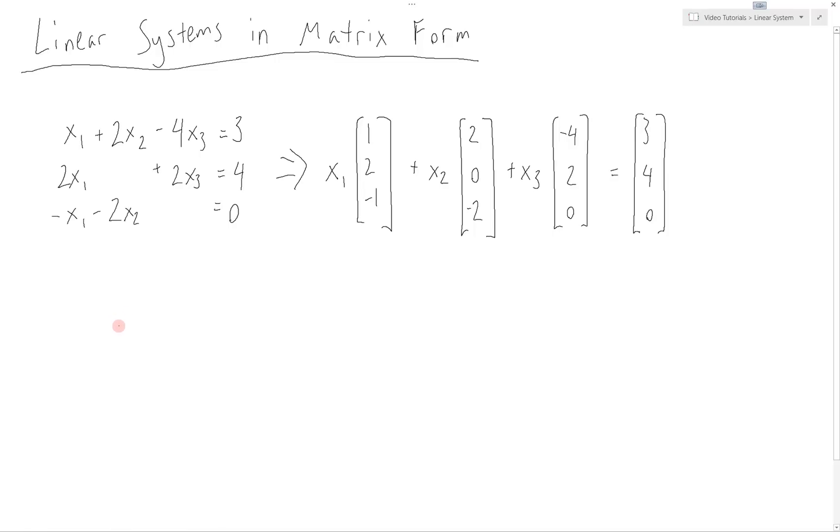So, we can have coefficient c1 times vector v1 plus c2 times v2 plus so on until coefficient cn times vector vn. This can be written in the form of a matrix where the columns are v1, v2, and so on until vn,